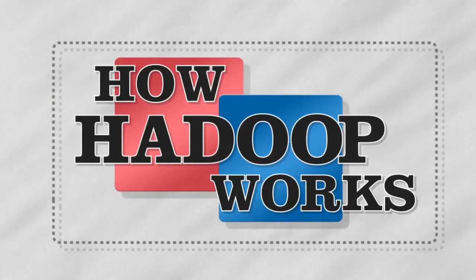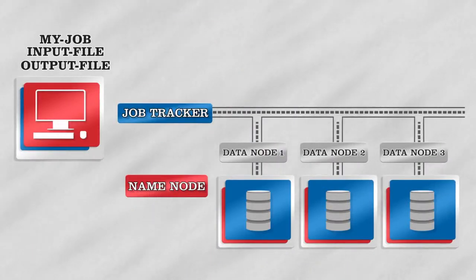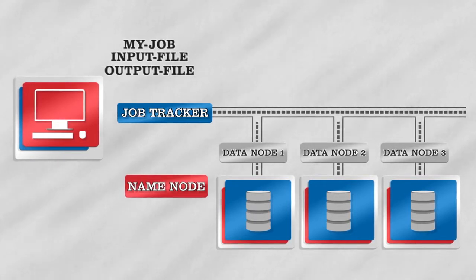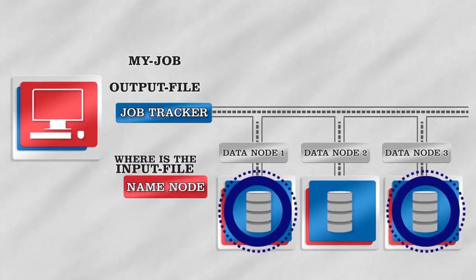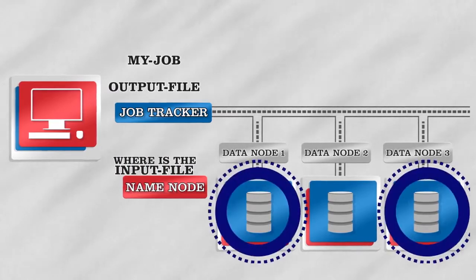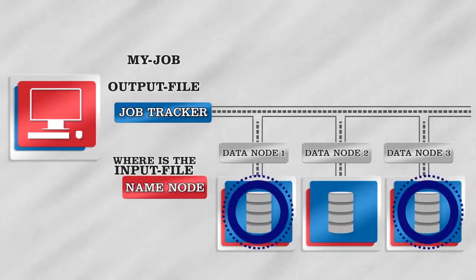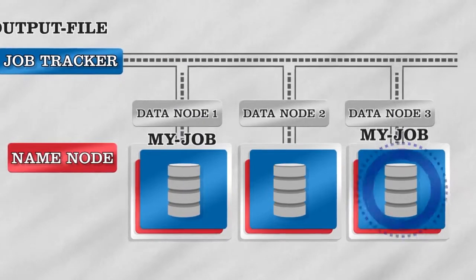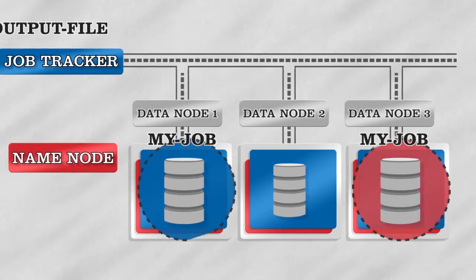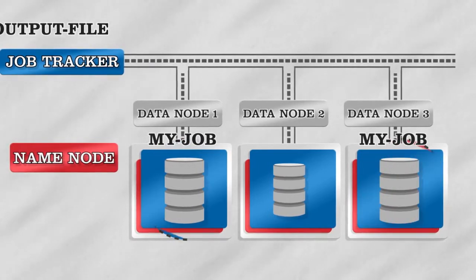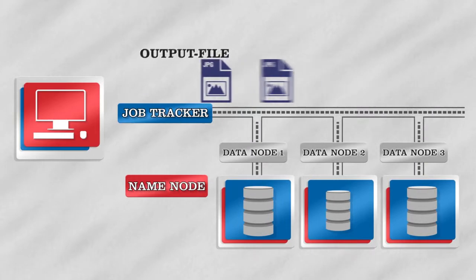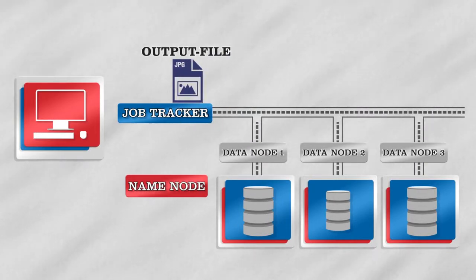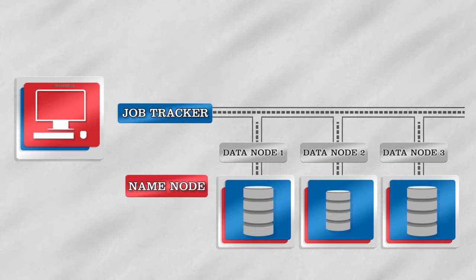How does Hadoop work? Suppose I wanted to look for an image spread across many hundreds of files. First off, Hadoop has to know where that data is. It queries something called a name node to find out all the places where the data file is located. Once it's figured that out, it sends your job out to each one of those nodes. Each processor independently reads its input file, looks for the image, and writes the results out to a local output file. That's all done in parallel. When they all report finished, you're done.